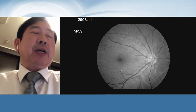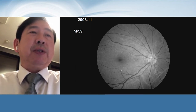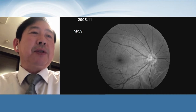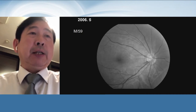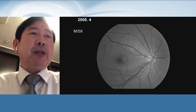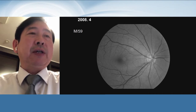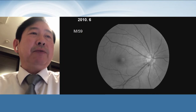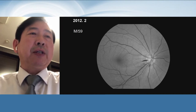This is another case — a 59-year-old gentleman. In 2003, there is no definite glaucomatous damage in the neural retina rim and nerve fiber layer. When we followed this patient, there was some subtle change with disc hemorrhage in the neural retina rim, and another optic disc hemorrhage and nerve fiber layer change in 2006. The nerve fiber layer defect became more prominent, with another recurrent hemorrhage, and a very clear new nerve fiber layer defect close to the macula, with the old RNFL defect getting wider.